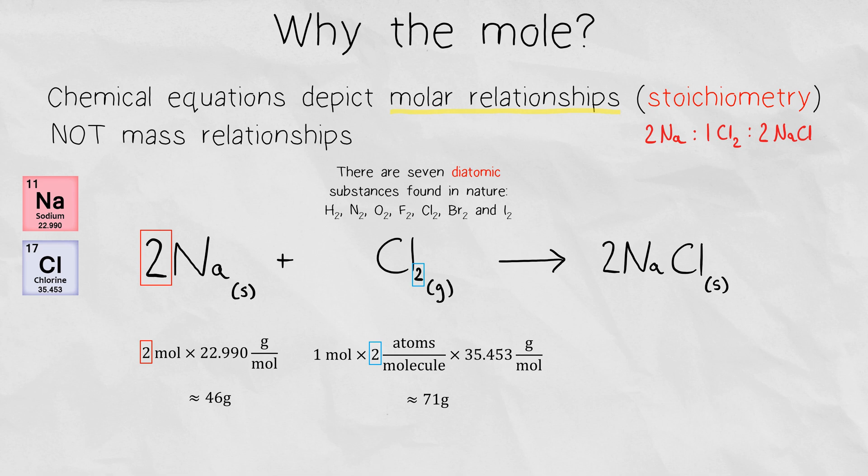Another thing that's worth noting is the sodium chloride. Since mass cannot be created or destroyed, we can actually determine that the final mass of the product will be the summation of our reactants. So the 2 moles of sodium chloride would have a mass of roughly 117 grams.